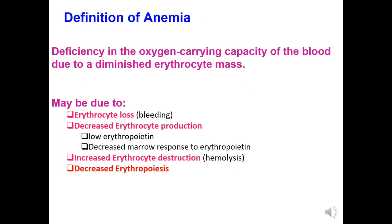Let's recall what you have learned. How do we define anemia? We define anemia as a deficiency in the oxygen-carrying capacity of the blood due to diminished erythrocyte mass. That may be due to blood loss, decreased erythrocyte production, low erythropoietin level, decreased marrow response to erythropoietin, or increased erythrocyte destruction or decreased erythropoiesis — anemia can occur due to any of these reasons.